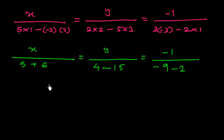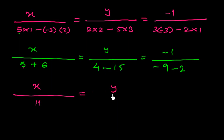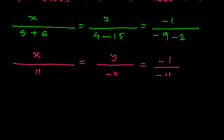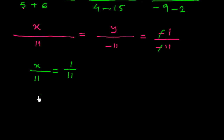See what happens now. x over: 5 plus 6 is 11. y over: 4 minus 15 is minus 11. And minus 1 over: minus 9 minus 2 is minus 11. So x over 11 equals minus 1 over minus 11, which equals 1 over 11. Simplifying, x is equal to 11 over 11, so x is equal to 1.